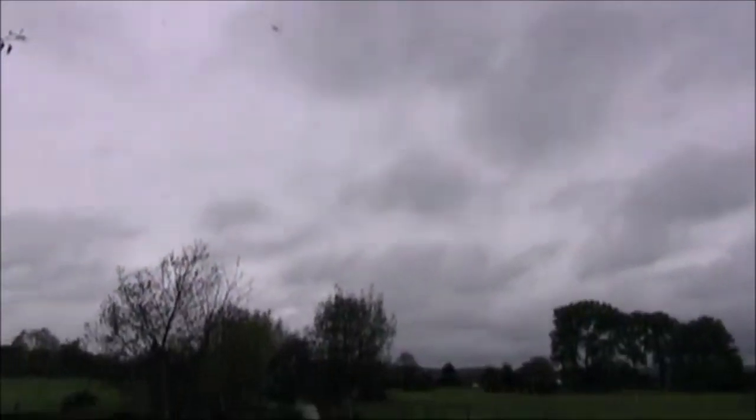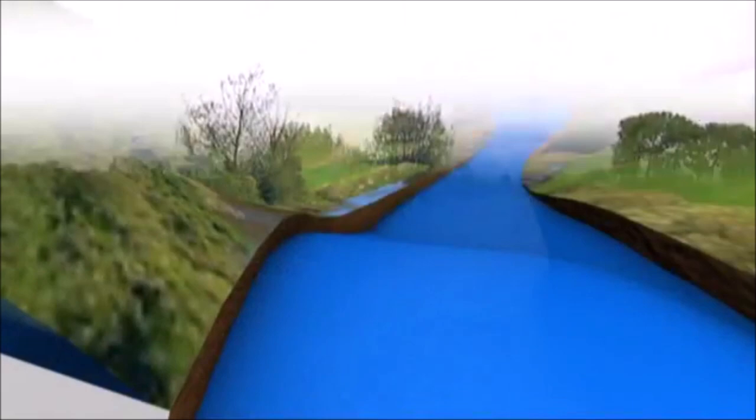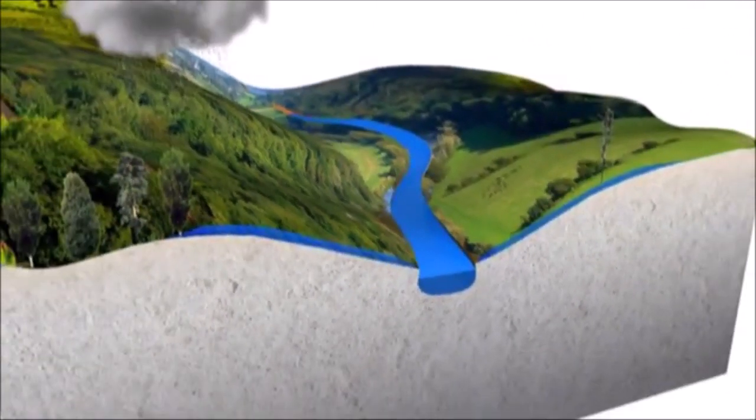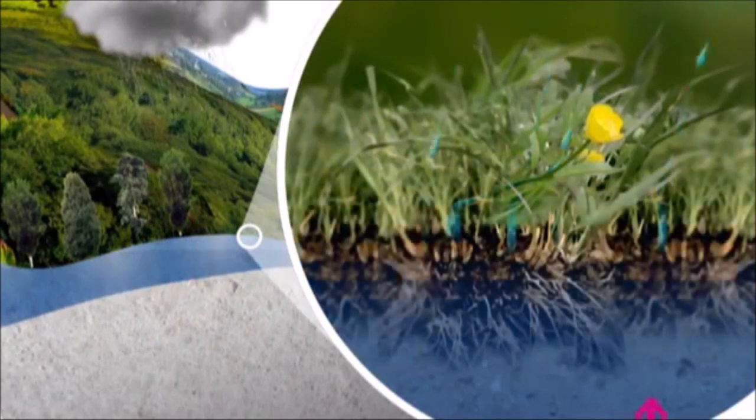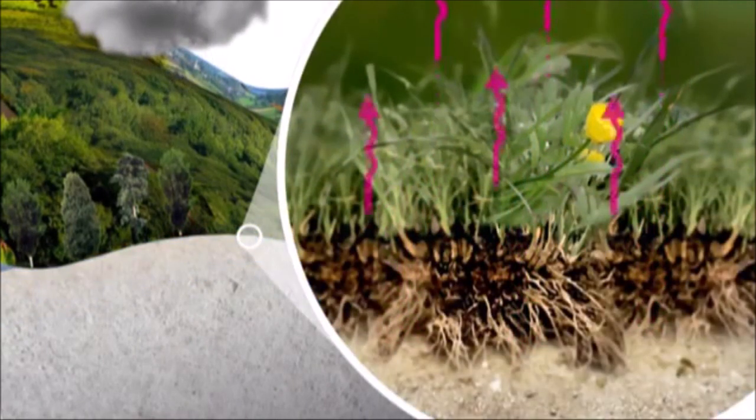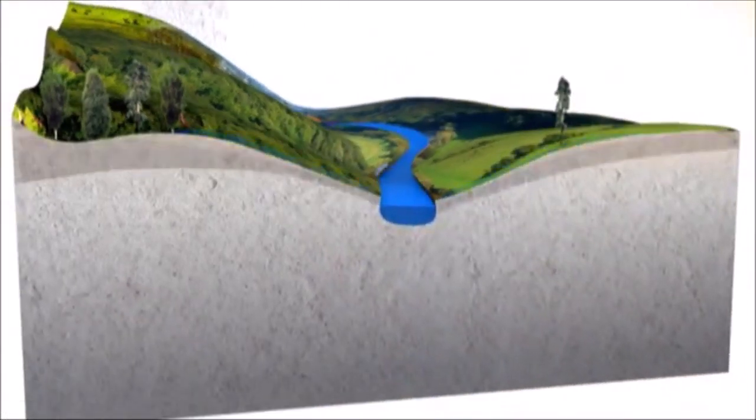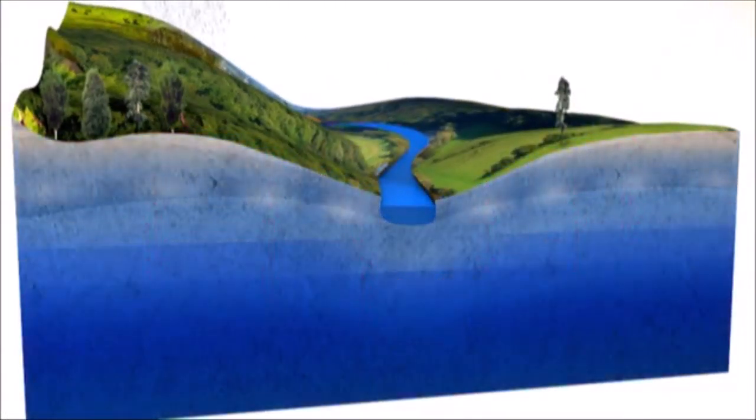As rain falls, it goes to one of four places. It either runs off the surface into rivers, soaks into the soil and gets used by plants, evaporates from plants and soil, or infiltrates into the ground where it is stored in natural underground reservoirs called aquifers.